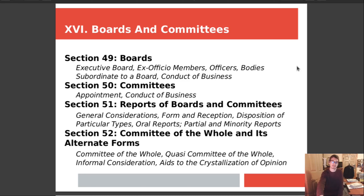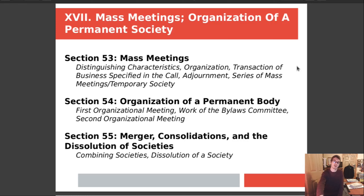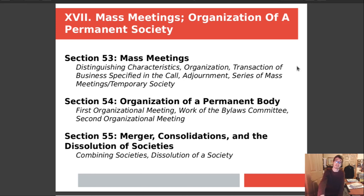Chapter 16 is boards and committees. Section 49 is all about what is a board. Section 50 covers what is a committee. Section 51 covers reports of boards and committees. Section 52 covers committee of the whole and its alternate forms. Chapter 17 is mass meetings and organization of a permanent society. Section 53 covers mass meetings — a different type of meeting that may constitute everybody in the general public, similar to an annual town meeting or open town meeting. Section 54 covers organization of a permanent body, and Section 55 covers mergers, consolidations, and the dissolution of societies.